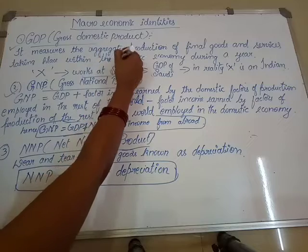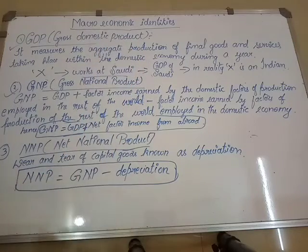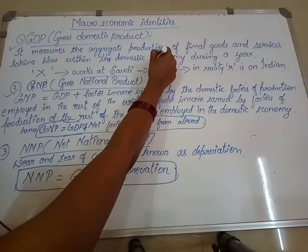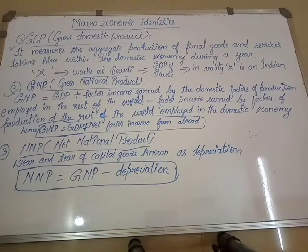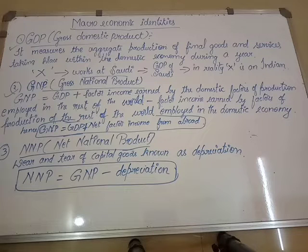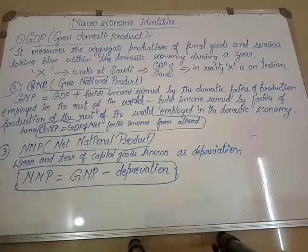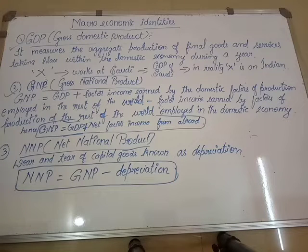GDP means the aggregate production of final goods and services taking place within the domestic economy during the year. So this is a measure of one term. And the final goods and services — that is what we are calculating, whether it is the exact value of the nation.